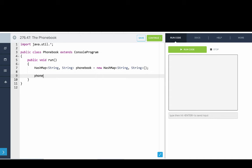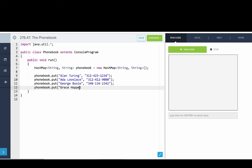Now let's put in the phone numbers. So we'll say phonebook dot put. And then the key is Alan Turing. And then a phone number. Great. Now we'll put in another entry. Phonebook dot put Ada Lovelace. Put in another entry for George Boole. And we'll put in one more entry for Grace Hopper.